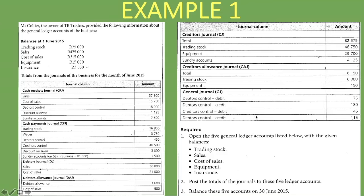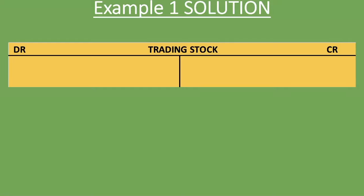Let's begin with trading stock. For more on general ledger accounts, there's a link in the description below explaining it step by step. For the T account: debit goes on the left, credit on the right. Trading stock is an asset — assets increase on the debit side and decrease on the credit side. The opening balance is 75,000 rand, recorded as 'balance brought down' on the debit side, dated 1st June 2015.